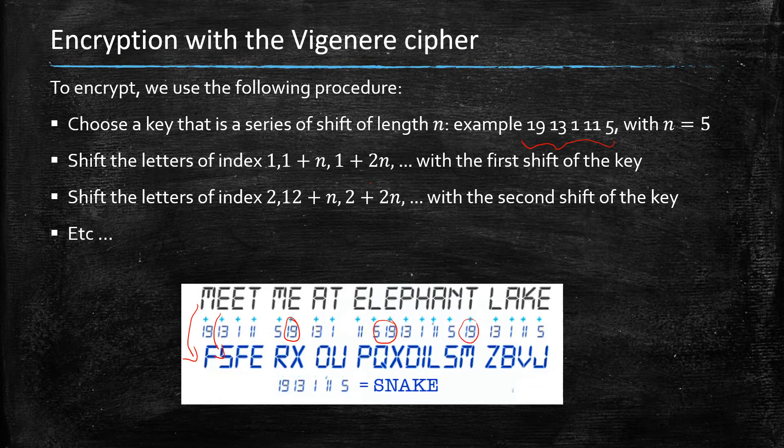So now in this case, in the case of n equals 5, the number of different shifts that you could do, which is the cardinality of the key space, is essentially the number of shifts of the alphabet—let's say 26, let's say that the trivial shift is a legitimate shift—raised to the power five.